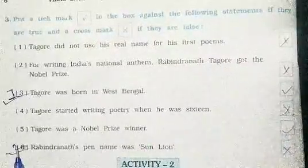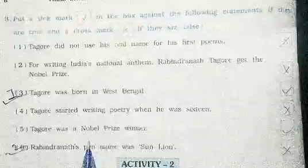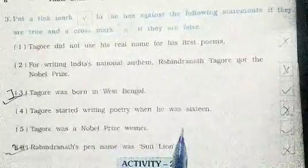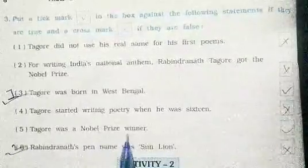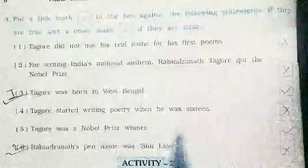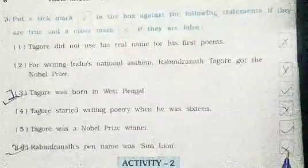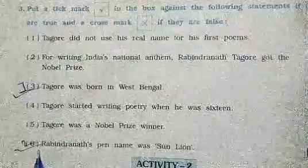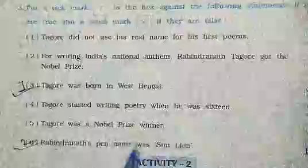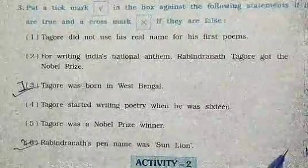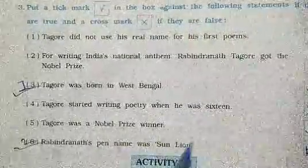Number 5: Tagore was a Nobel Prize winner. This statement is right, so we put a tick mark here. Number 6: Rabindranath's pen name was Sun Lion. This statement is right, so we put a tick mark here.